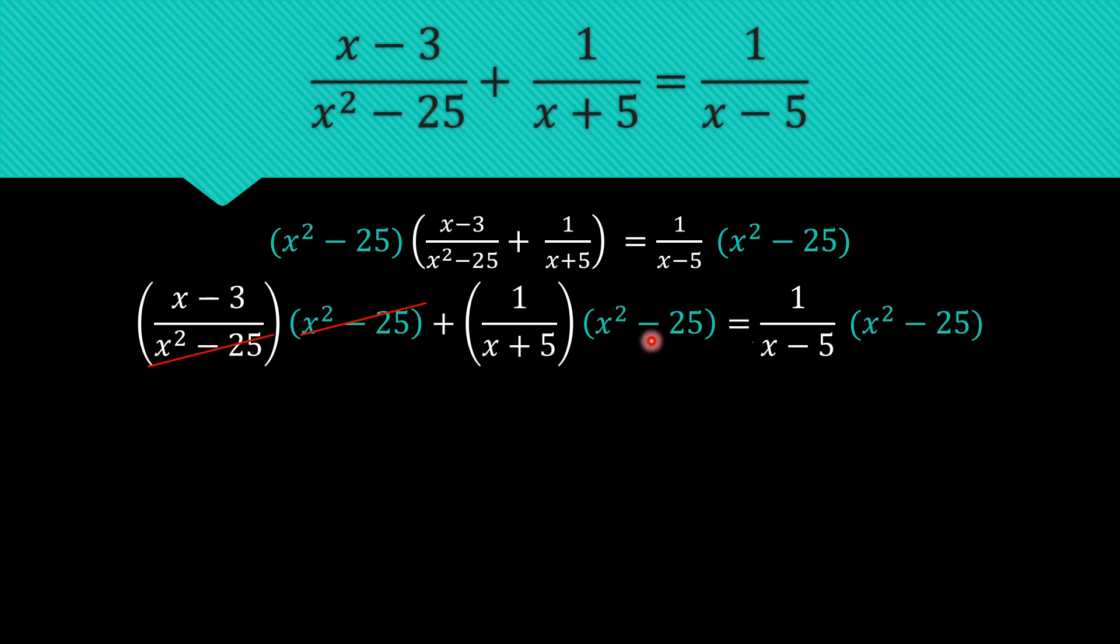Now for these terms, we have to remember that x squared minus 25 is factorable to x plus 5 and x minus 5 by the difference of two squares. So x plus 5 here is actually a factor of x squared minus 25 and so we can cancel that and what we have left is x minus 5.